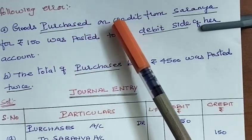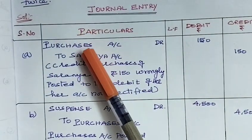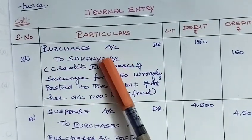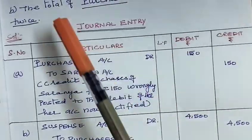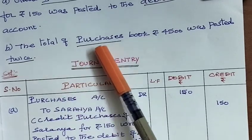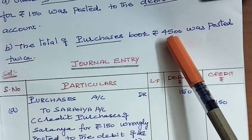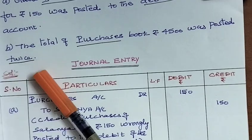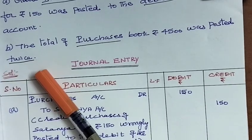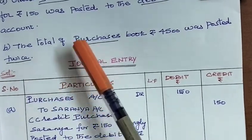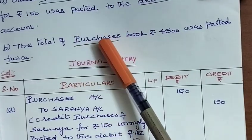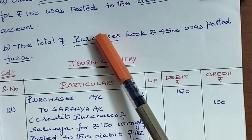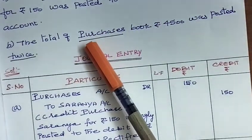Purchases booked on credit from Saranya. What is the original journal entry? Purchases account debit to Saranya. Purchases account debit to Suspense account — we have to rectify the error. We use the Suspense account.